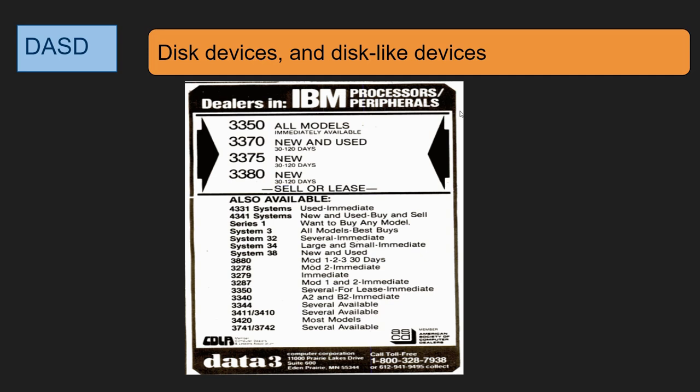This is an ad from Computer World, I think November 1981, where they were selling used disks. You'd think — why buy a used disk? Well, not so with IBM, because they were excellently serviced and maintained. IBM would come and fix it within hours. So it very often made sense to buy used disk devices — 3350s, 3370s, 3375s, 3380s.